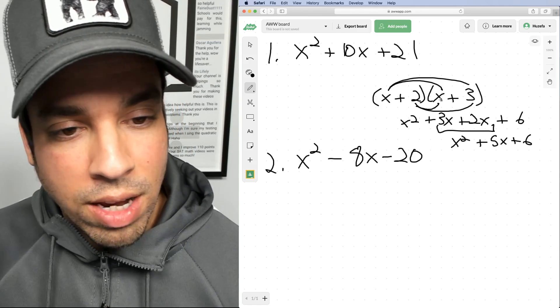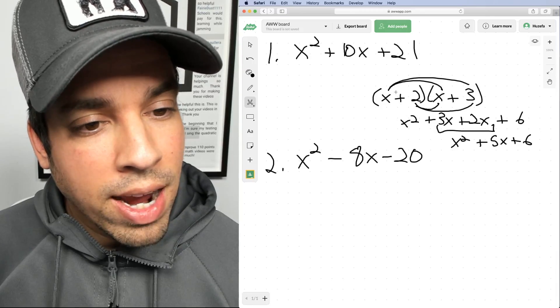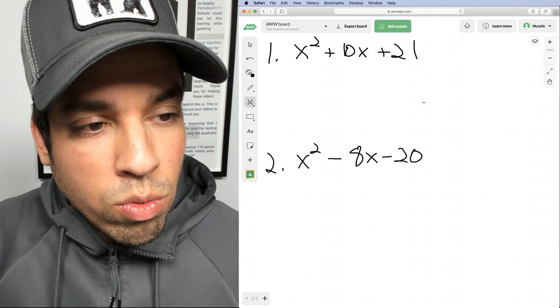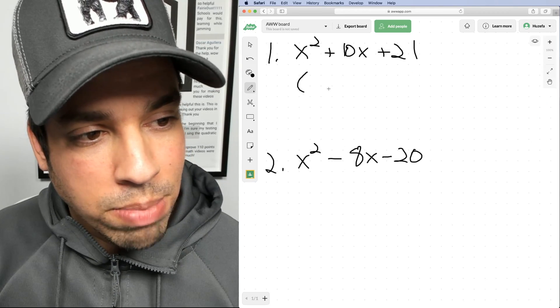That's coming from the standpoint of: we've got two binomials, we're FOILing them, and that's what we end up with. With factoring, we're going the other way around. We're trying to rewind to get the two sets of binomials.